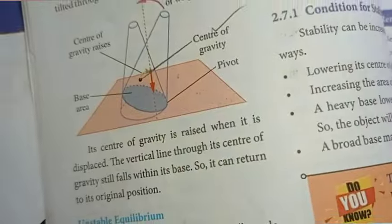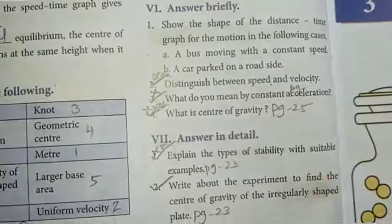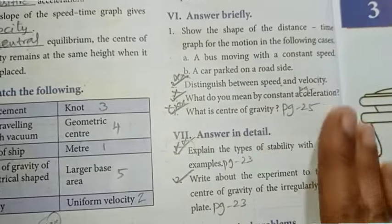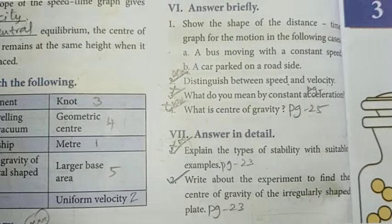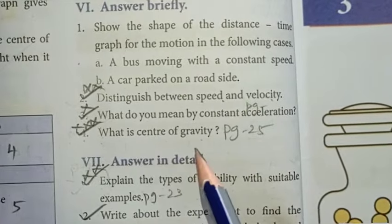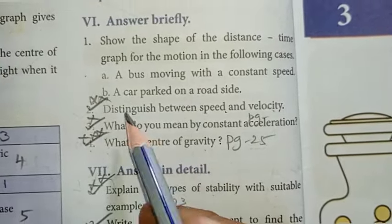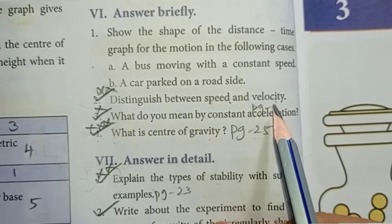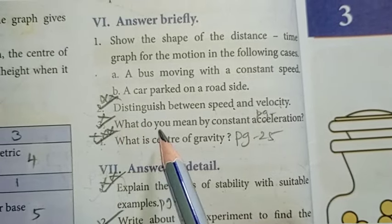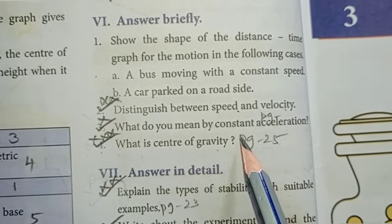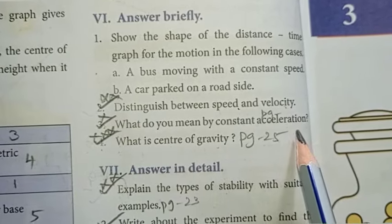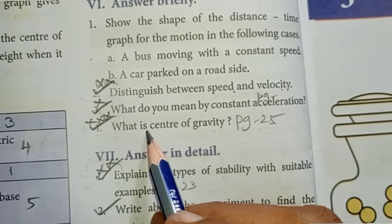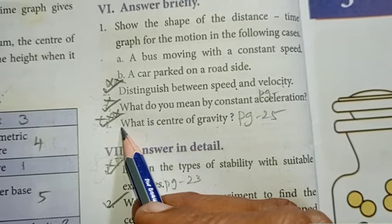Look at the 1-mark questions at page number 26. For answer briefly — that's the second one — distinguish between speed and velocity. Moon district is important. What do you mean by constant acceleration? 2 districts is important. What is center of gravity? That's repeated.